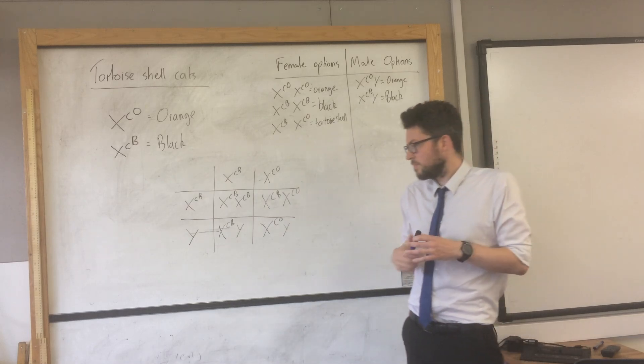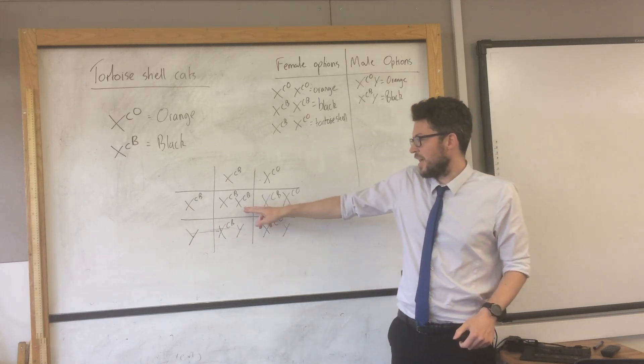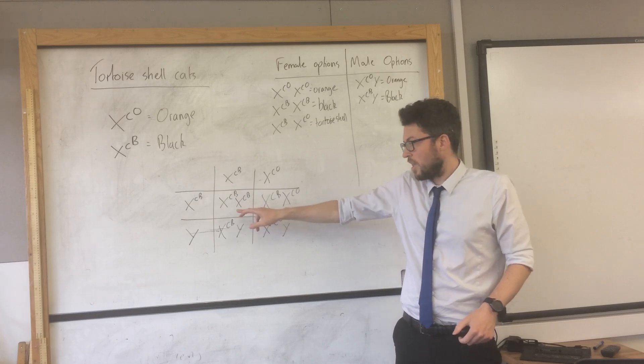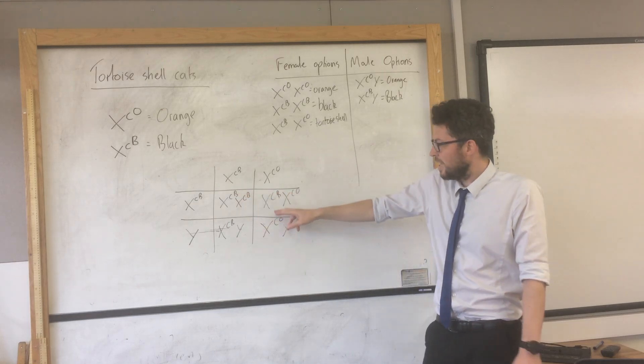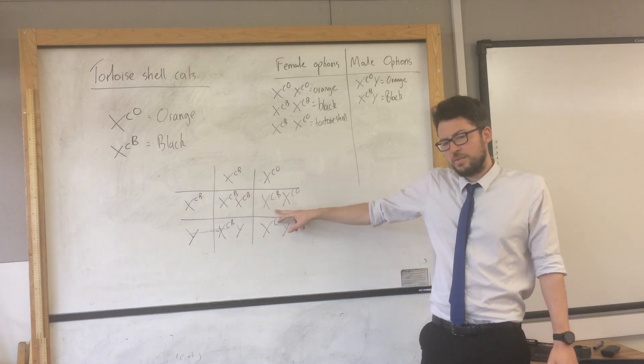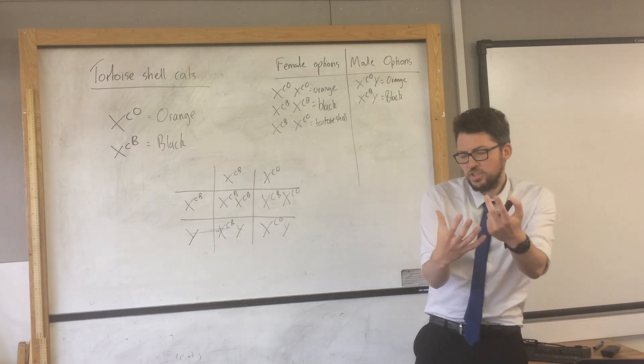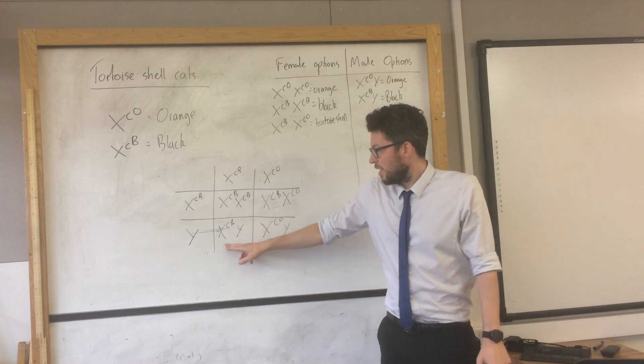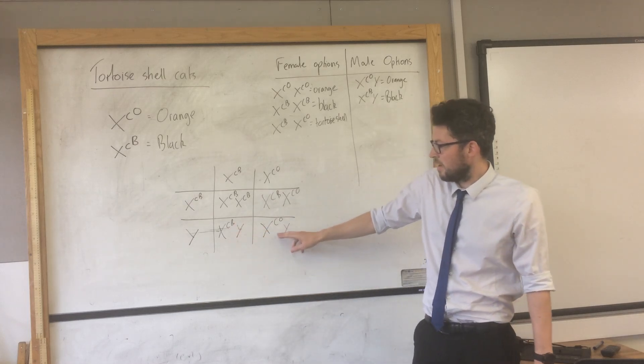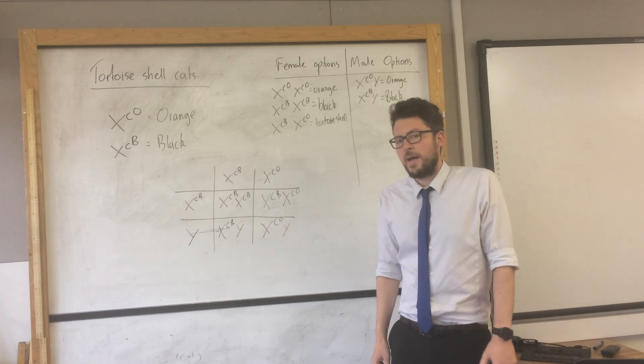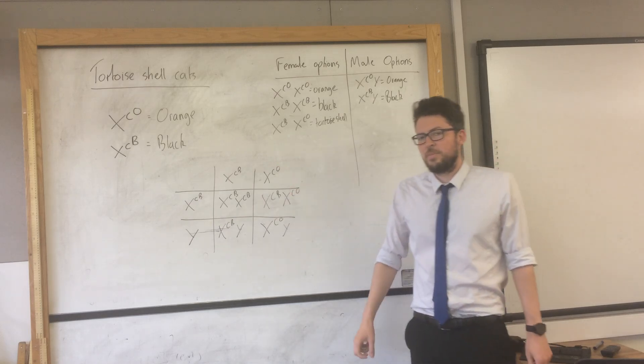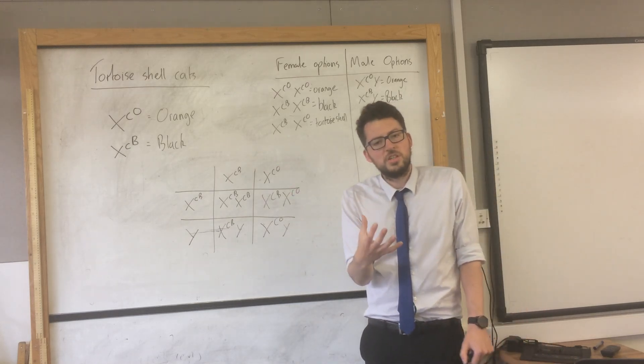So these are the possible combinations that can be made from a black male breeding with a tortoise shell female. For these offspring, what we would see is a black female, XX but both with B's; a tortoise shell female because they have a B and an O, making them black and orange; and we would have a black male and an orange or ginger male.